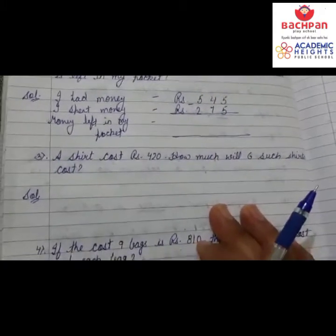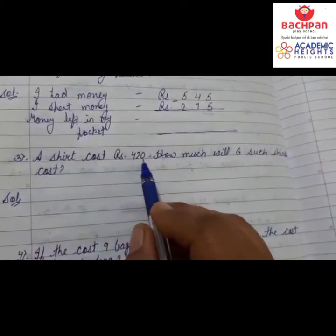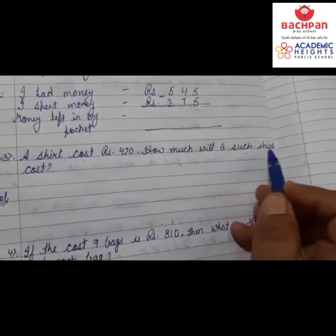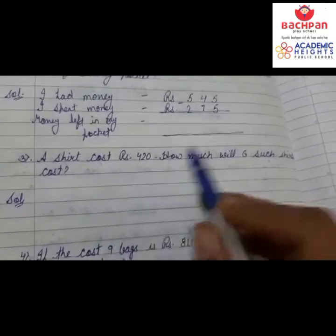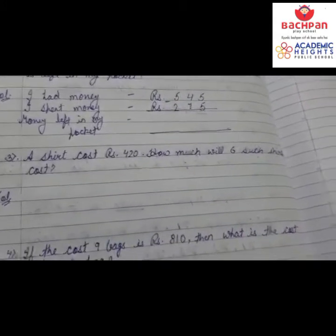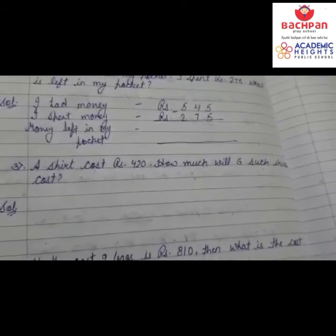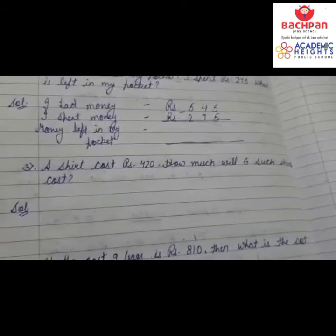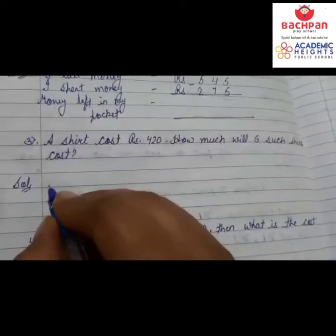Next question: A shirt costs rupees 420. How much will six such shirts cost? One shirt costs 420, and we need to find the cost of six shirts. When we know the cost of one thing and need to find the cost of more, we multiply. Going from small to big — from one to six — we do multiplication.